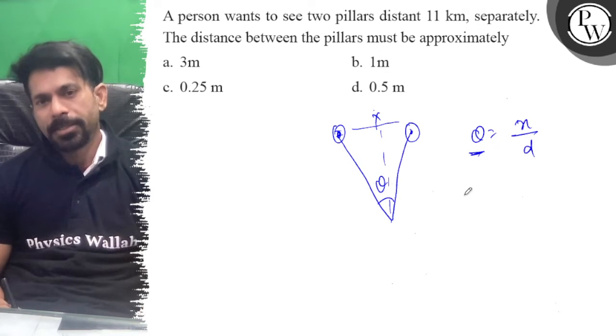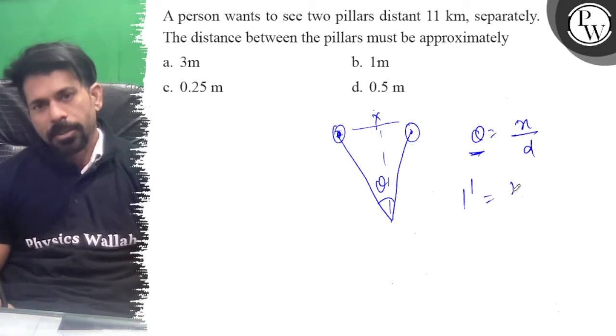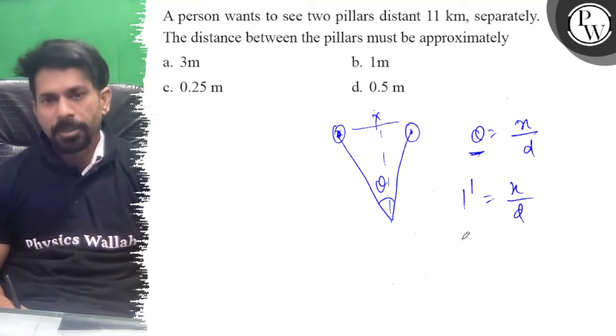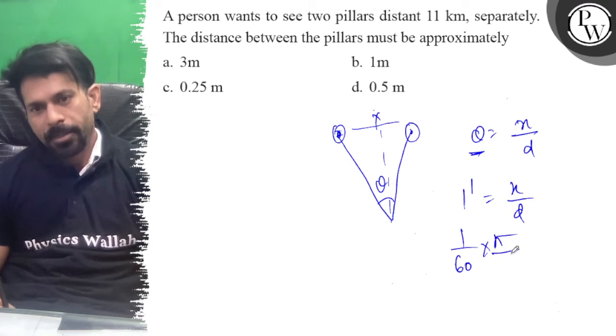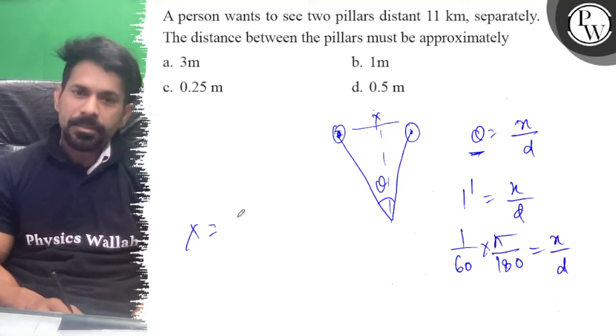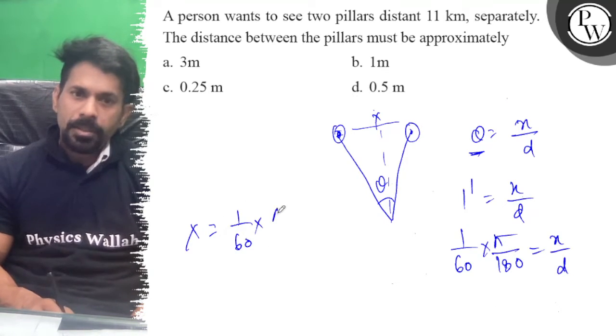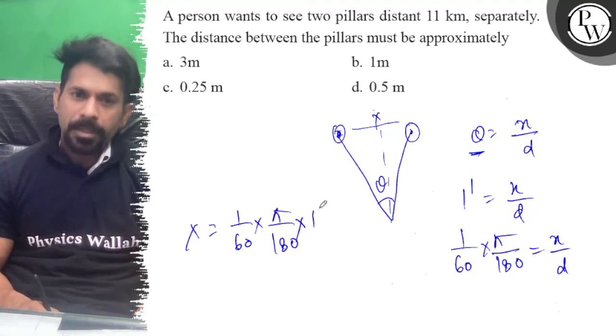And this is the resolution limit which is 1 minute, that is equal to x by d. And 1 minute we have 1 by 60 degree, and we convert to radian, pi by 180. So x by d, x is 1 by 60 into pi by 180 into d. d is 11 kilometers, that's 11,000 meters.